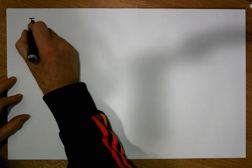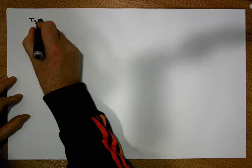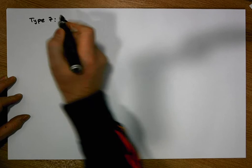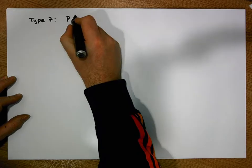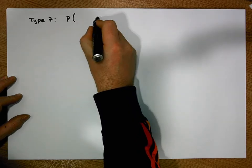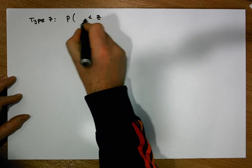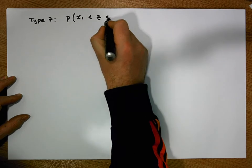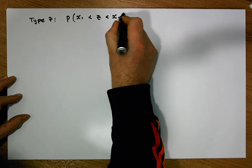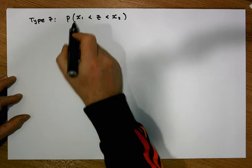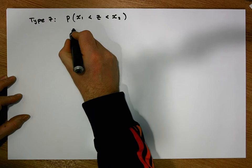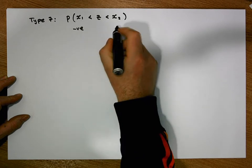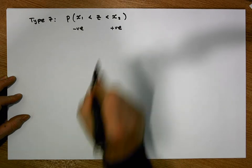This particular probability calculation we're going to work through we've called Type 7 probabilities. These are probabilities where we want to calculate the probability of a z-score being bound below by a particular x value and bound above by a particular x value — let's call these x1 and x2 — where x1 is negative and x2 is a positive value.